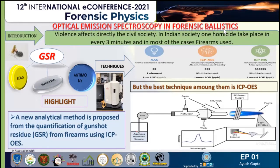There are different analytical techniques to trace these elements, such as AAS — Atomic Absorption Spectroscopy, AES — Atomic Emission Spectroscopy, and MS — Mass Spectroscopy. But among all these techniques, the best technique is ICP-OES — Inductively Coupled Plasma Optical Emission Spectroscopy.